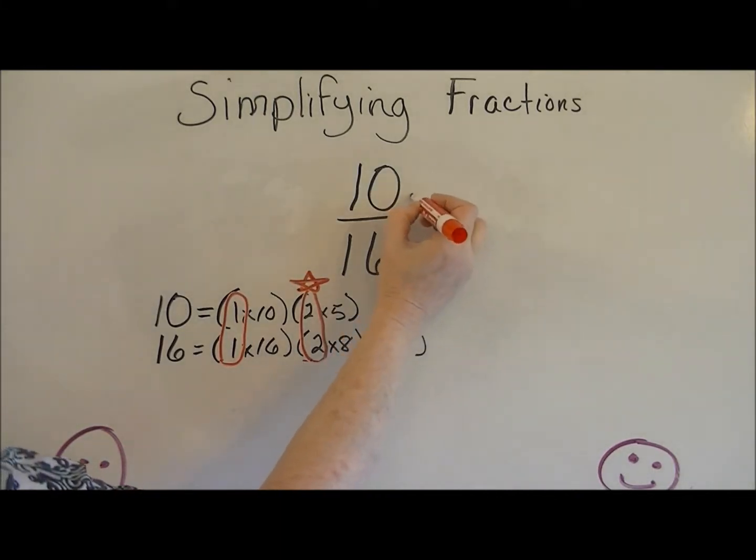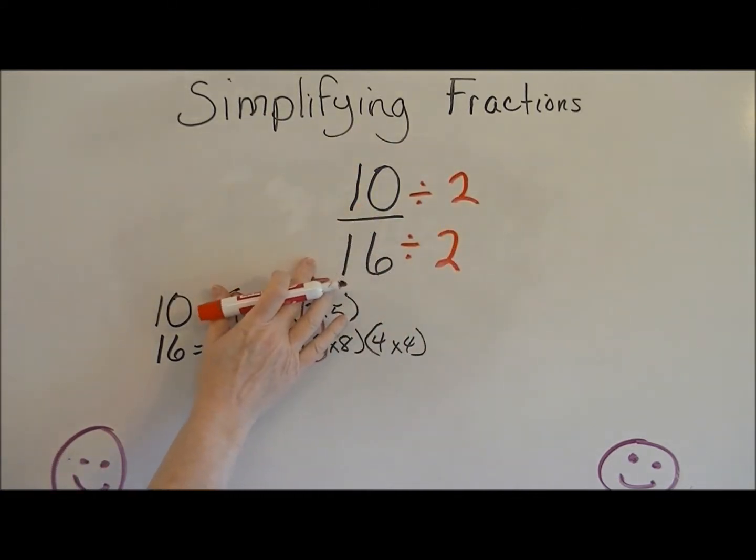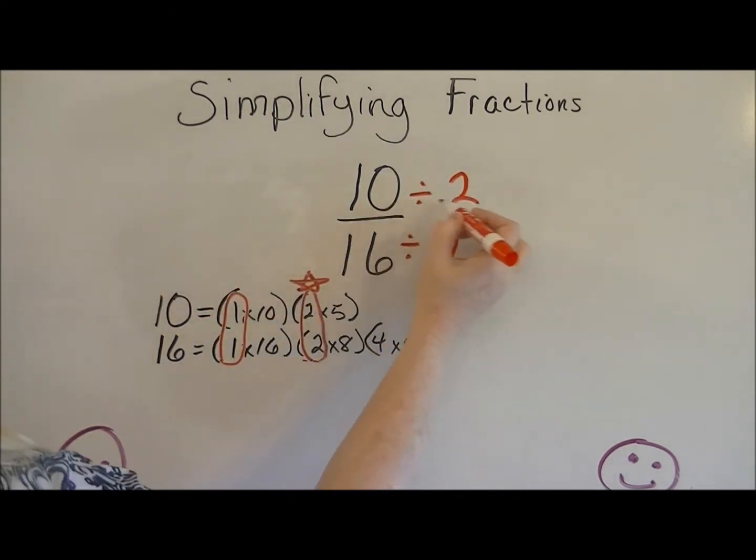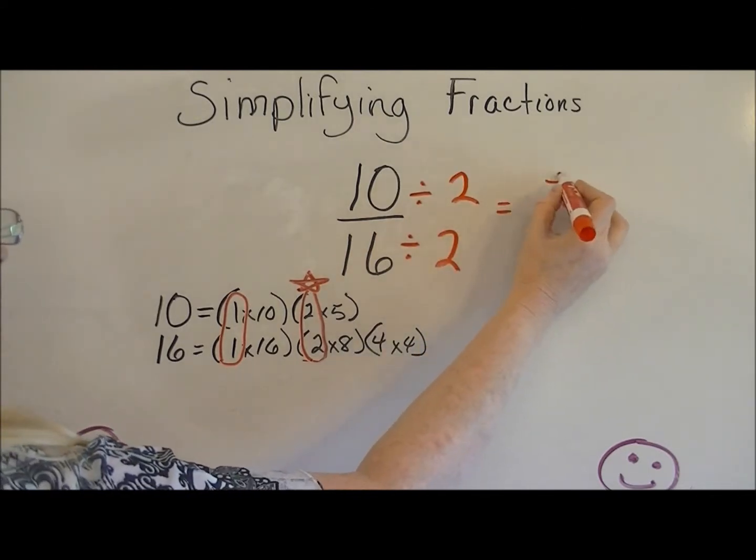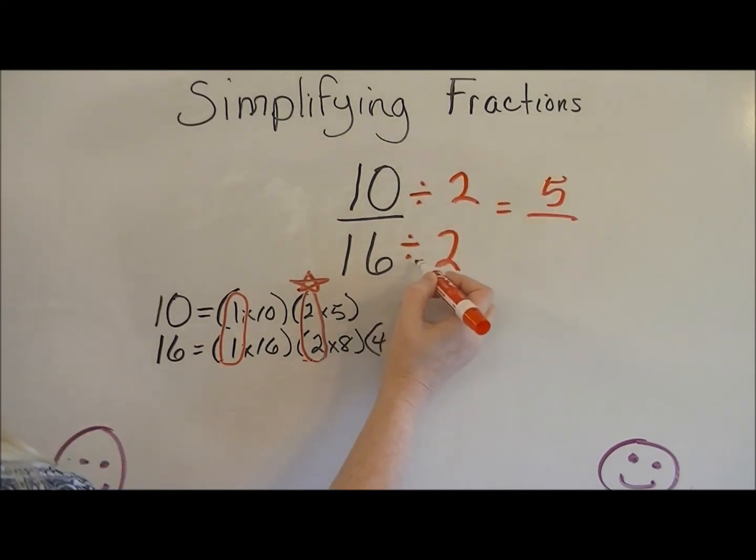I'm going to bring the 2 and divide both the numerator and the denominator by 2. 10 divided by 2 is 5, and 16 divided by 2 is 8. And that's the fraction in simplest form.